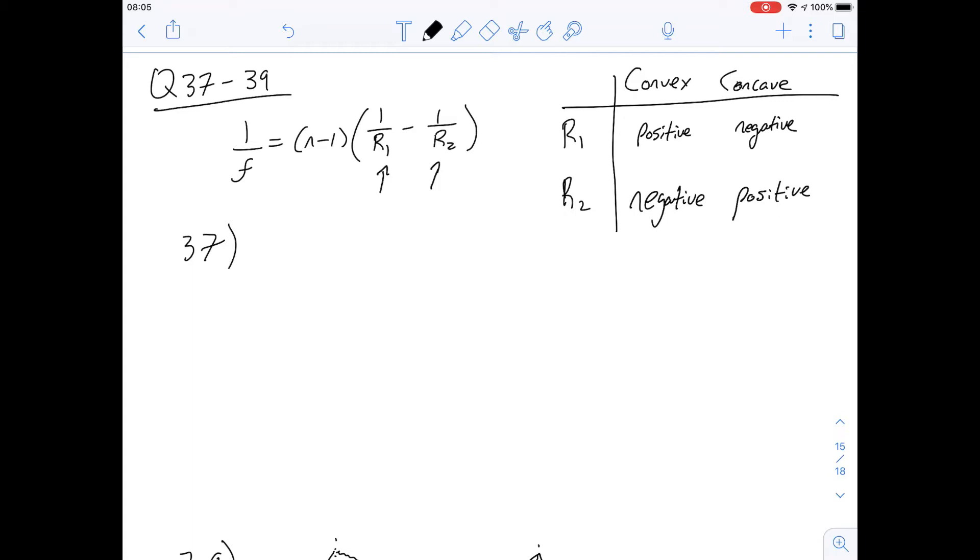Okay, so question 37 says the focal length of a biconvex lens that has curvature radii of 60 centimeters on both sides. So let's write down what that tells us. And the refractive index is going to be 1.75. So we've been given our equation to use here, so we can just plug in the values.